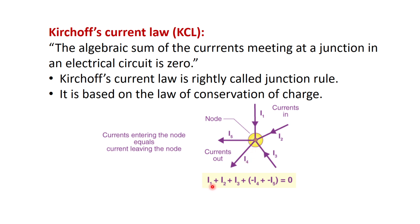In mathematical expression: i1 + i2 + i3 are the three incoming currents, while i4 and i5 are outgoing, so the expression becomes i1 + i2 + i3 - i4 - i5 = 0. So this is Kirchhoff's current law.